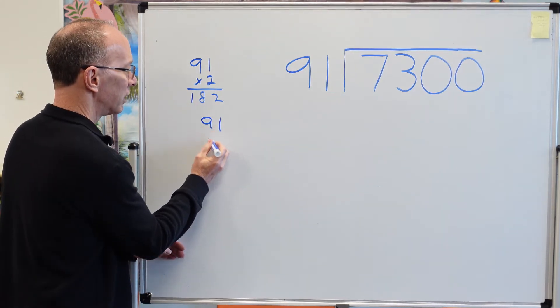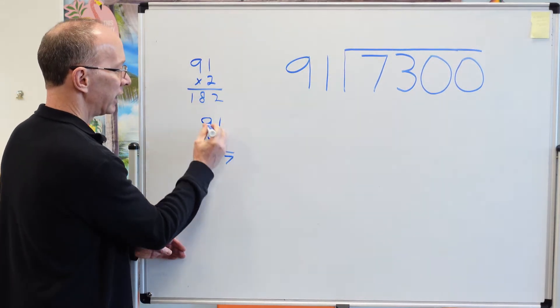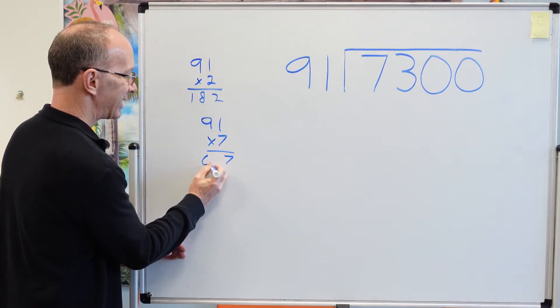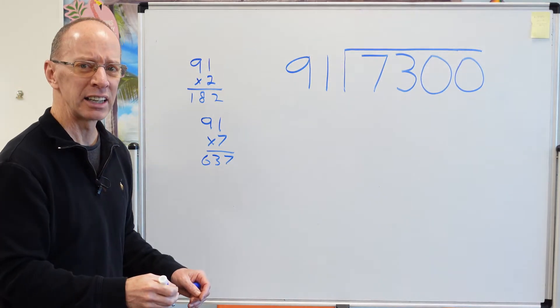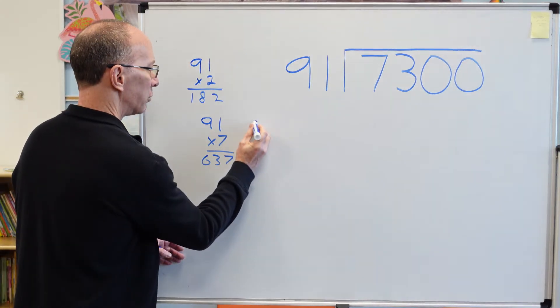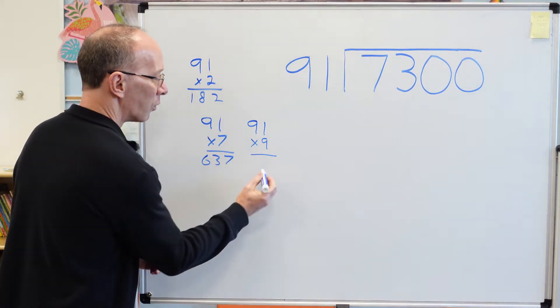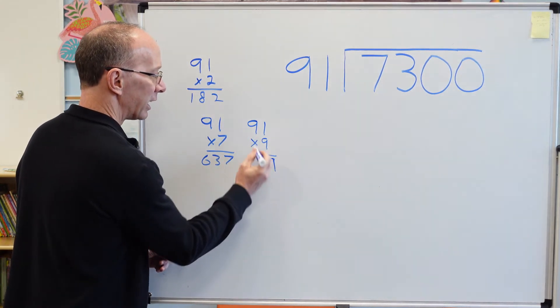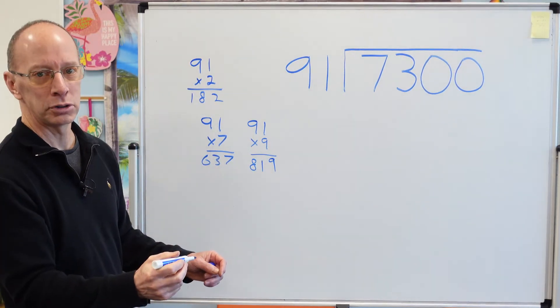So I'm going to put 91 times 7. 7 times 1 is 7, 9 times 7 is 63. I think I can even get it even closer than that. So let's go ahead and put 91 times 9. 9 times 1 would be 9 and 9 times 9 would be 81. Whoa, too big.